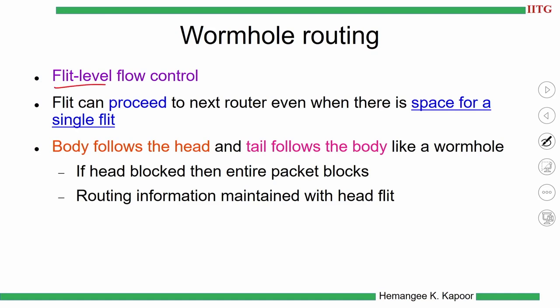Wormhole requires space only for a single flit, which is a good point. The head goes, then the body, then the tail follow the same path. However, if the head gets stuck somewhere — for example, it wants to go forward but there is a blockage — even if there are other avenues in that direction, the body and tail cannot take alternative decisions. They must follow the head. So if the head is blocked, the entire packet blocks.